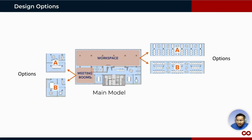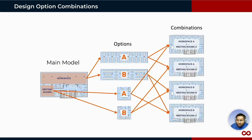We have created two options for the meeting room and two options for the workspace. Design option combinations are when we have different options and combine them in various ways — for example, Meeting Room A with Workspace A, or Meeting Room B with Workspace A. Using these options, we can have a combination of different spaces within our project.